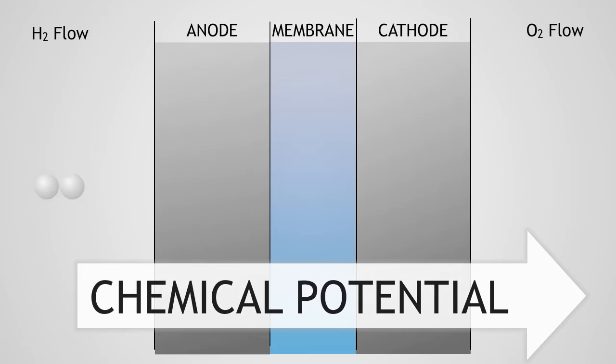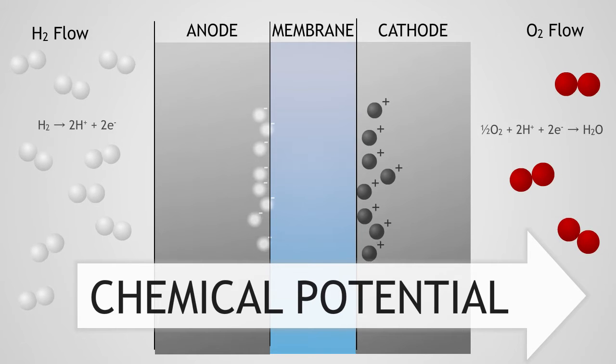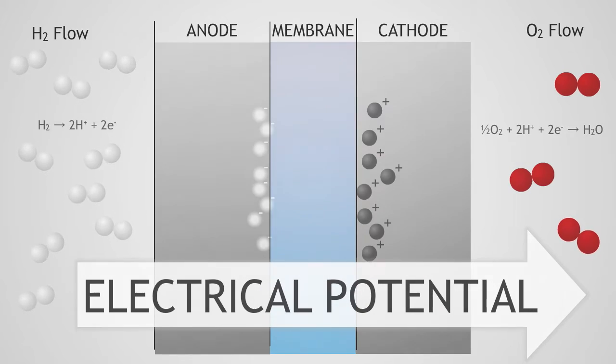A fuel cell splits apart the hydrogen into electrons and protons. The protons go through the membrane, the electrons go around, and they all recombine with oxygen to form water. When the fuel cell catalyst forms free electrons that want to move toward the cathode, what I called chemical potential now can be thought of as electrical potential.